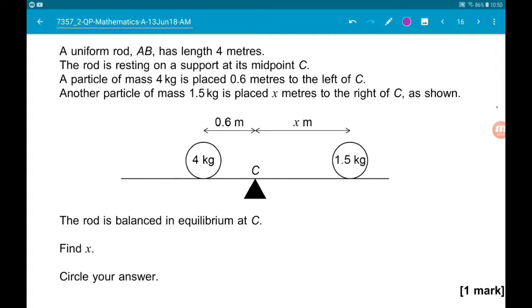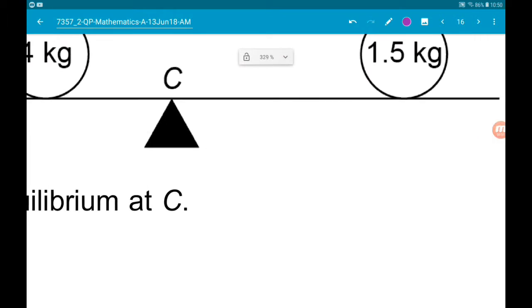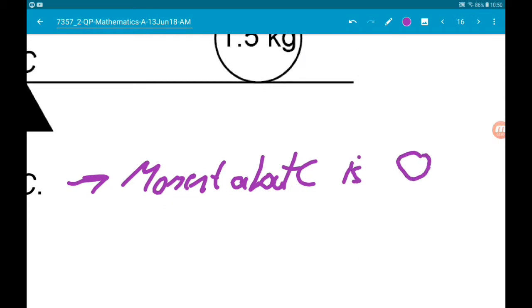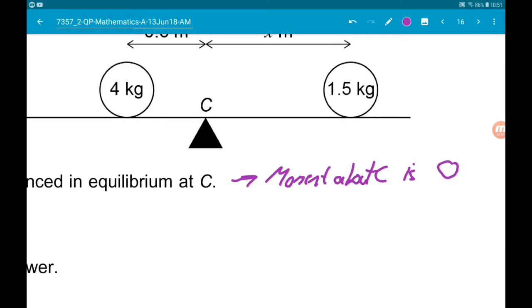Given that the rod is in equilibrium, that means the moment about C is 0. To calculate a moment, you do the force multiplied by the distance from the pivot.